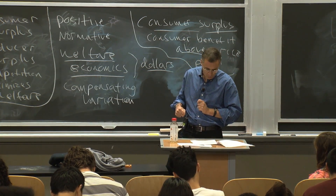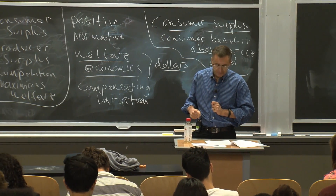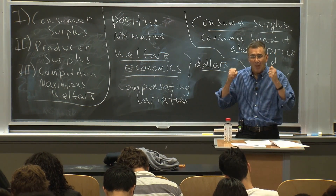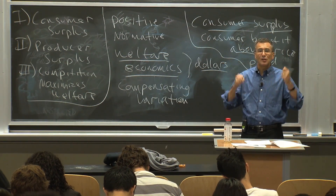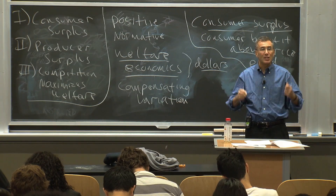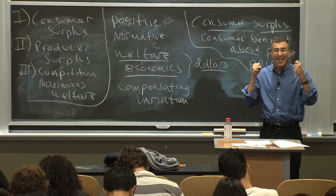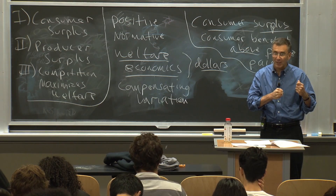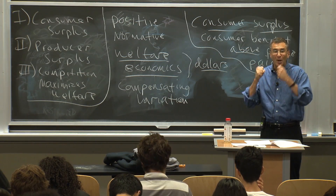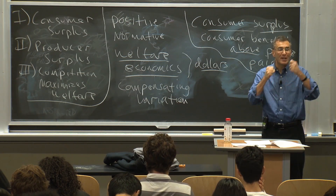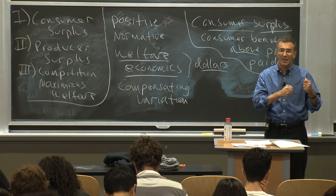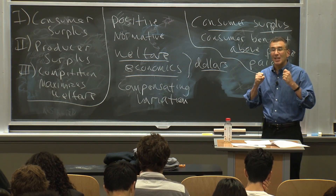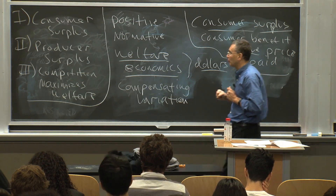The bottom line is: since diminishing marginal utility means the last unit is worth less than the first unit, I must by definition make surplus on the first unit. That's the logic. That's individual consumer surplus.